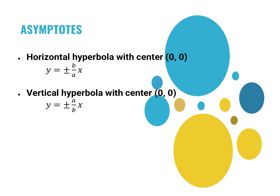For a horizontal hyperbola, the equation for the asymptotes is y = ±(b/a)x, so b over a represents your slope. For vertical hyperbolas, the slope is ±(a/b)x. You definitely want to memorize which formula goes with which — is it b over a, or a over b? But other than that, it's pretty simple.